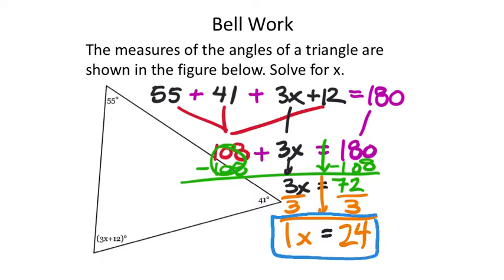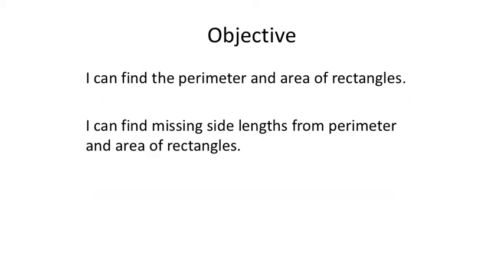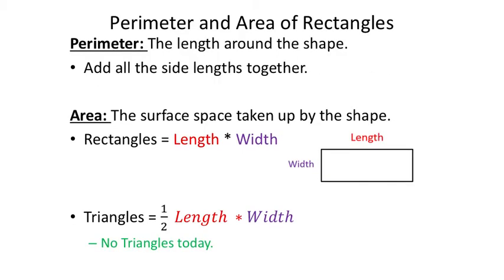We could have also found the measure of that angle by substituting x back into the expression, but we were just solving for x. Here are our two objectives for the day: I can find the perimeter and area of rectangles, and I can find missing side lengths from the perimeter and area of rectangles. Take 30 seconds and copy these down.